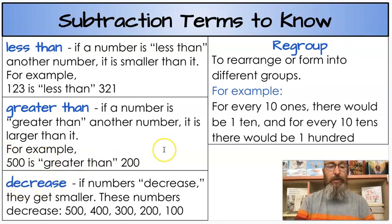Another term, decrease. If numbers decrease they get smaller. These numbers decrease: 500, 400, 300, 200, 100. They decrease. They get smaller as you go.